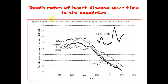Similarly, the death rates of heart disease over 6 countries — these are the death rates shown in dotted line graphs. The death rate is on the y-axis and the year is on the x-axis. It is just giving data of death rate in various countries during the period 1952 to 2010.